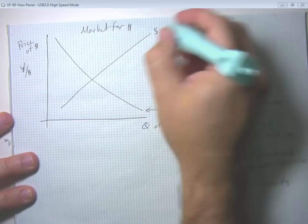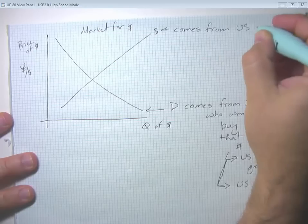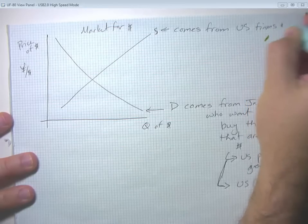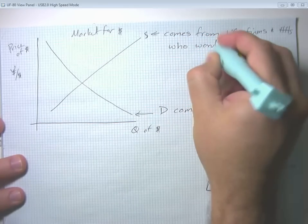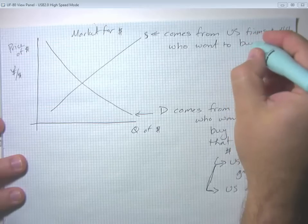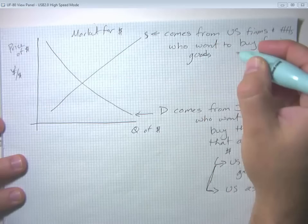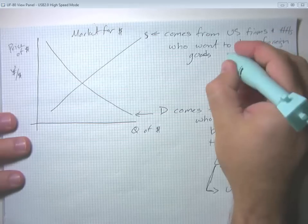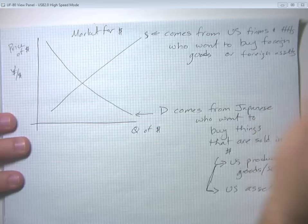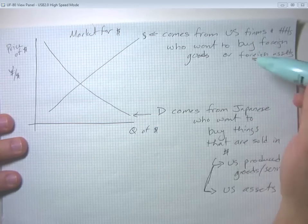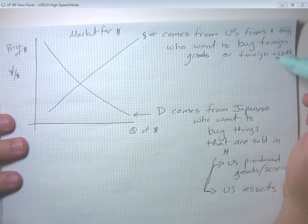So where does the supply of dollars come from? Well, supply of dollars comes from US firms and households who want to buy foreign goods, foreign is Japanese in this case, but we're using the yen, of course, as a stand-in for all countries. So who want to buy foreign goods or foreign assets? Because again, if you want to buy foreign goods, those foreign suppliers want to be paid in yen. Or if you want to buy stock on the Tokyo stock market, well, those things are priced in yen.